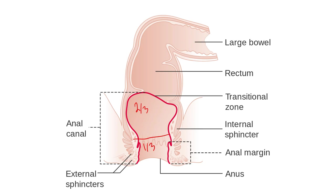What you need to know — and this is high yield — is that an anal fissure happens distal to the pectinate line, meaning it's happening down here in the lower one-third. Also, this is a longitudinal tear, meaning the tear runs lengthwise, not across. And it's happening here distal to the pectinate line.